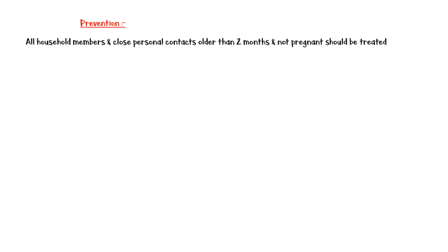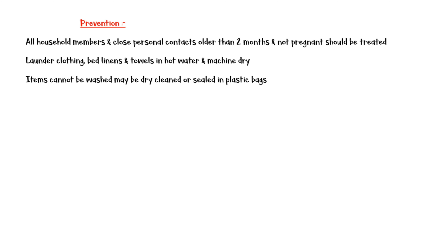As far as prevention is concerned, all household members and close personal contacts older than 2 months and not pregnant should be treated for scabies even if they are asymptomatic. Advise them to launder clothing, bed linens, and towels in hot water and machine dry them. Items that cannot be washed may be dry-cleaned or sealed in plastic bags. All carpets and furniture should be vacuumed and the vacuum bags should be immediately discarded.